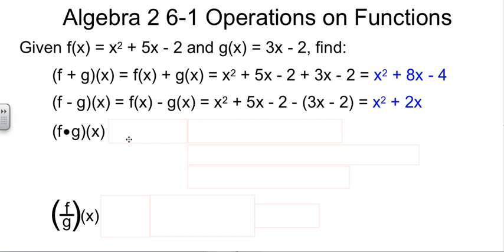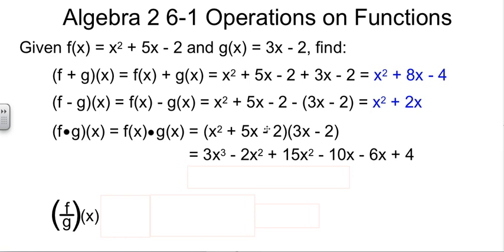f times g of x would mean f of x times g of x. So f of x, the stuff that we know for f of x, times the stuff that we know for g of x. Multiply those things together, and I just distributed x squared times 3x, x squared times negative 2, 5x times 3x, 5x times negative 2, negative 2 times 3x, negative 2 times negative 2. And then all I did was collect up terms. When I collect up my terms, I get my final answer: 3x cubed plus 13x squared minus 16x plus 4.